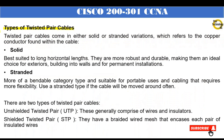Types of twisted pair cables. Twisted pair cables come in either solid or stranded variations, which refers to the copper conductor found within the cable. Solid cables are best suited to long horizontal lengths — they are more robust and durable, making them an ideal choice for exteriors, building into walls, and permanent installations. Stranded cables are more bendable and suitable for portable uses and cabling that requires more flexibility. Use a stranded type if the cable will be moved around often.